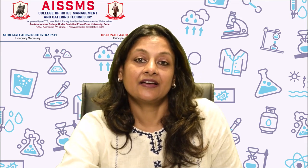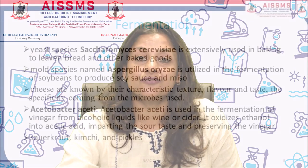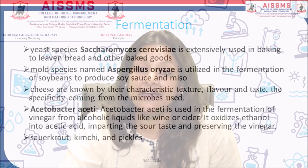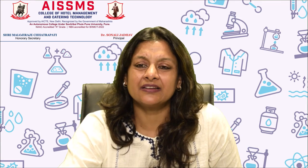Cheese — which is everybody's favorite — is one of the oldest food items in which microbes were and are used. Different varieties of cheese are known by their characteristic texture, flavor and taste, with the specificity coming from the microbes used. For example, the large holes in Swiss cheese are due to the production of a large amount of CO₂ by a bacteria named Propionibacterium sharmanii. Roquefort cheese is ripened by growing a specific fungi on it, which gives it a very particular and peculiar flavor.